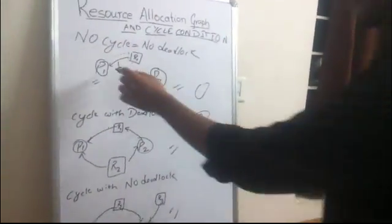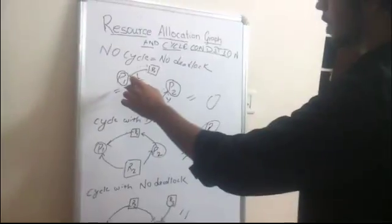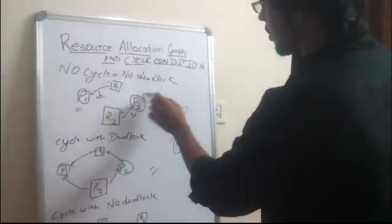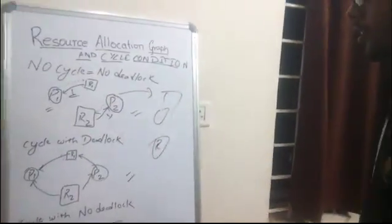P1 requests R1 and it is allocated R1. P2 requests R2 and is allocated R2. There is no cycle and as you can see, there is no deadlock.